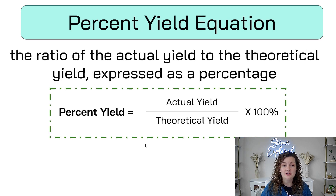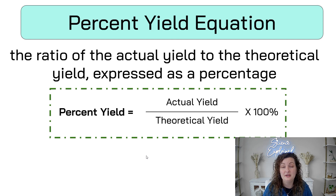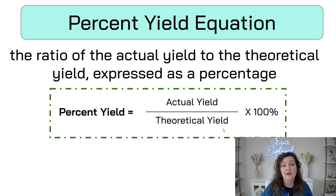So let's go ahead and look at how we solve for percent yield now. It's a very easy equation — you're going to do your actual yield divided by your theoretical yield, and then you're going to multiply it by 100 to turn it into a percentage.